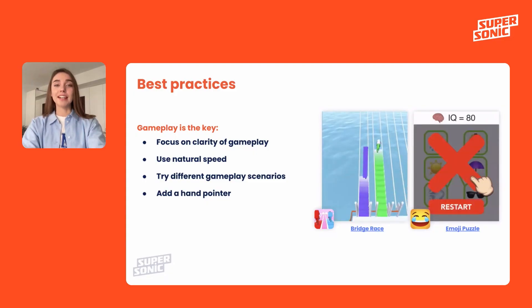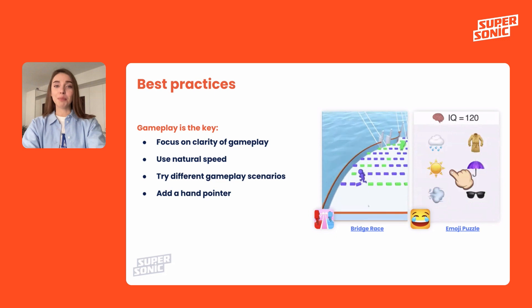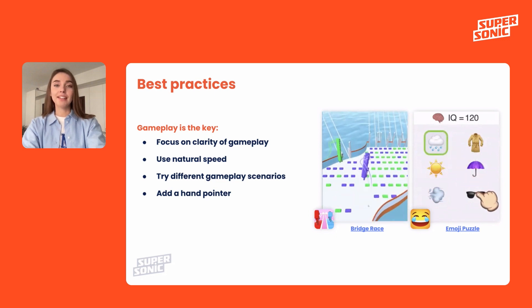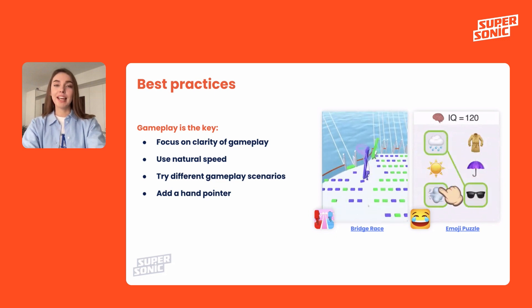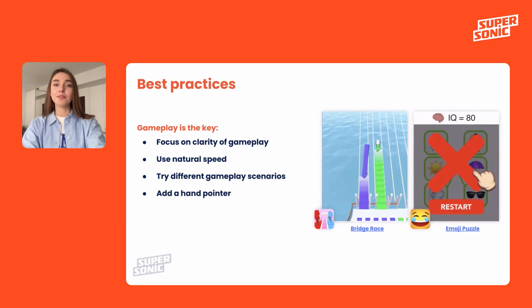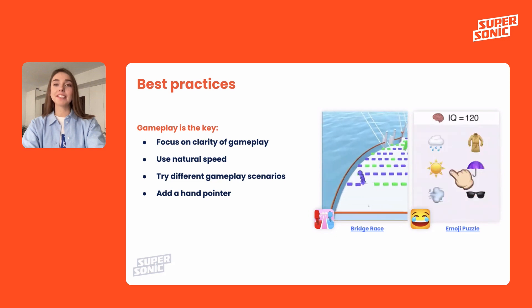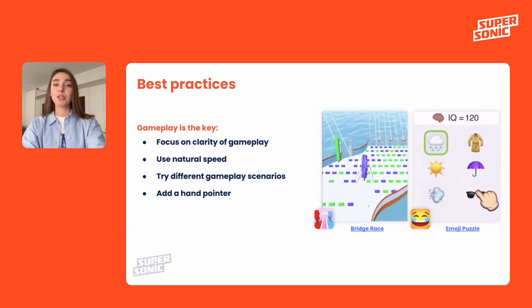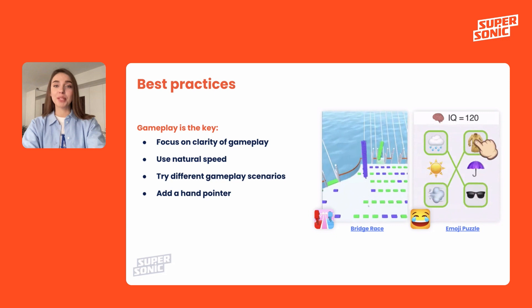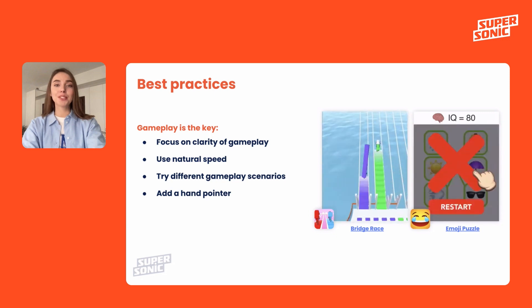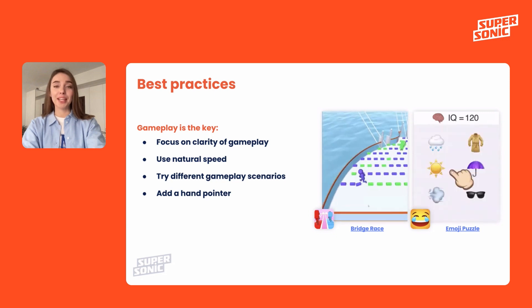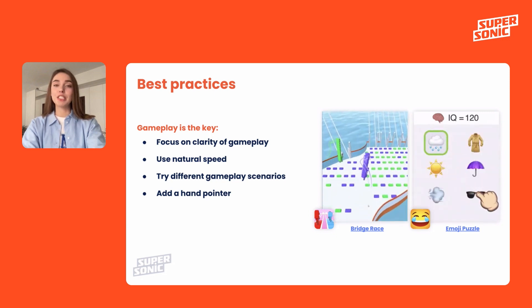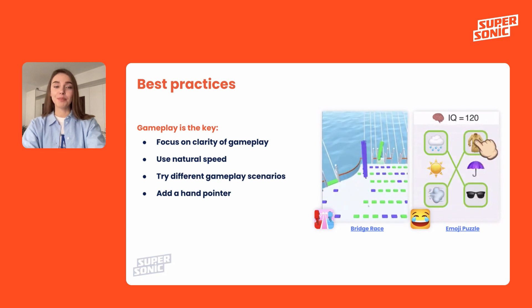Clarity of gameplay is essential. The game's mechanic, control, and goal should be clear within the first five to seven seconds of your video. Because we don't have much time to explain to users what's going on in our creatives, we just need to start our gameplay immediately.